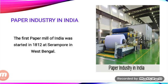Softwood is the principal raw material for making newsprint and high-class printing papers. Newsprint is the paper used for printing newspapers and magazines. Paper is very important for our educational system — we use paper to write and our books are made of paper. The first successful effort in paper production was made in 1867 with the setting up of the Royal Bengal Paper Mills at Ballygunge near Kolkata.